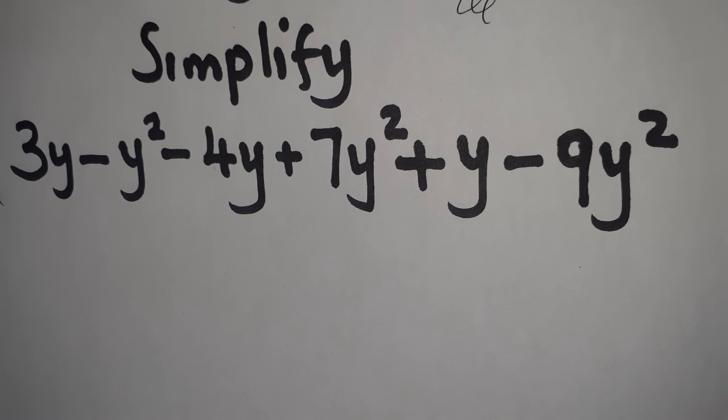So by simplifying we are saying you need to identify the like terms, put them or collect them together, then you simplify them. That is what we are supposed to do here. Alright, so what do I mean?